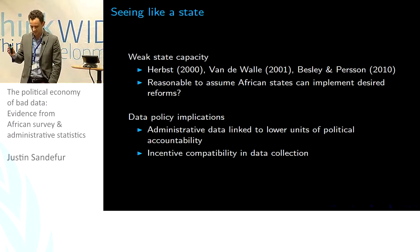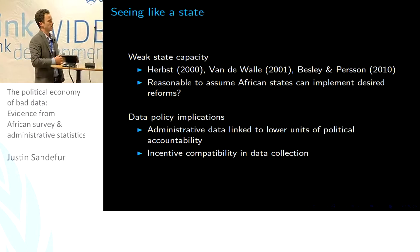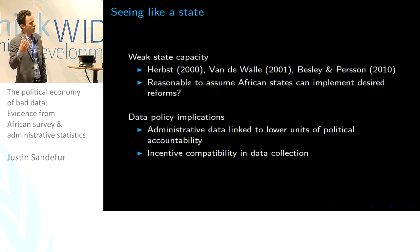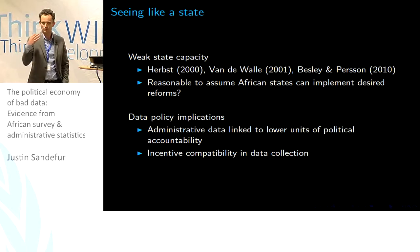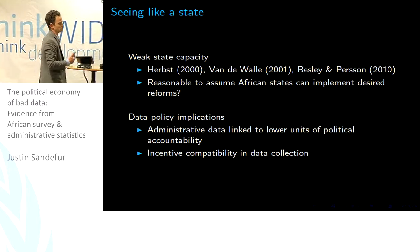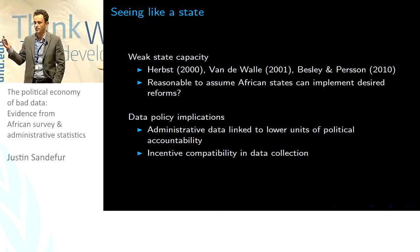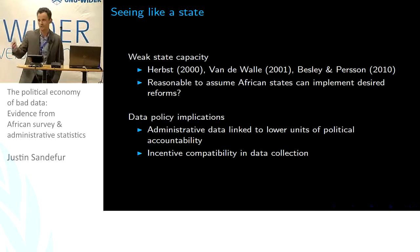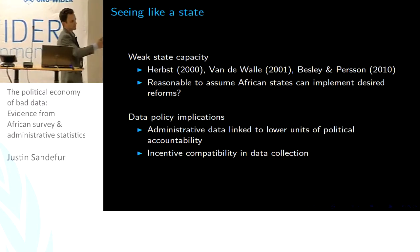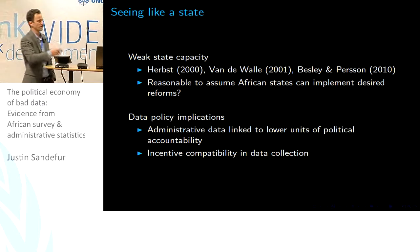If we look at things from the state side, the state's task is very different. Drawing on a parallel tradition in the analysis of African political economy — from Herbst to Vanderval and Bezley — these analyses suggest we should question whether African states, even with an incentive contract for results, can necessarily implement the desired reforms or even get the data they need. What does a Ministry of Education need to run a school system? They need administrative data linked to lower units of political accountability — district-level, clinic-level data. And there they run into huge problems of incentive compatibility about getting headteachers to report truthfully.